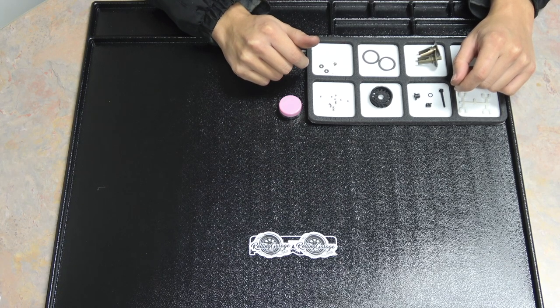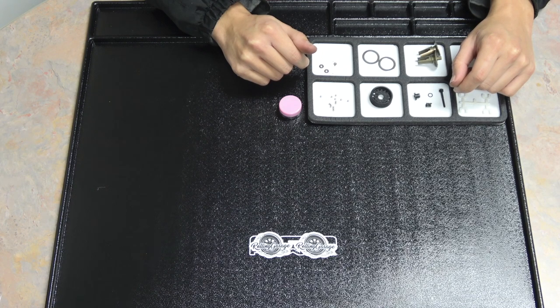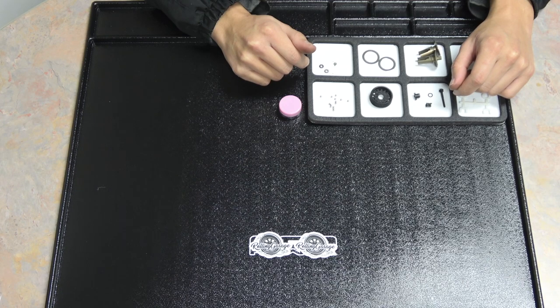So this is a Yokomo ball diff designed for the YD2, but I know a lot of you MST guys run ball diffs since there isn't really a gear diff option for you, and this process is pretty universal among all ball diffs.